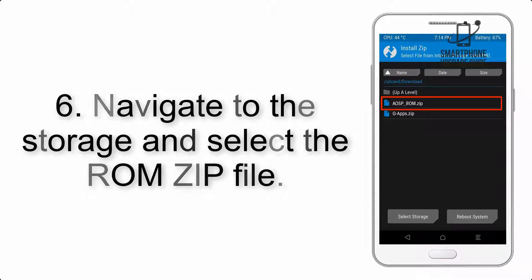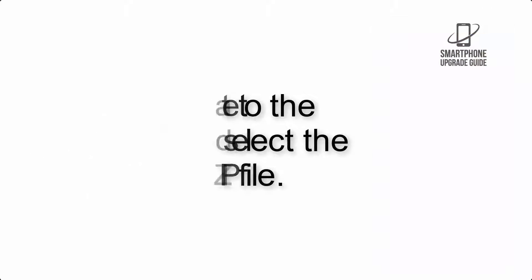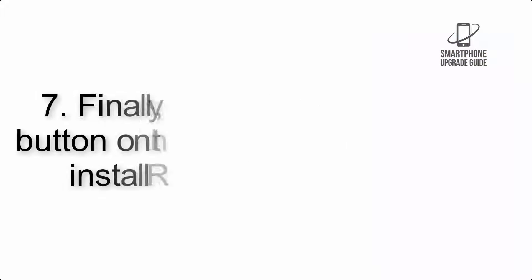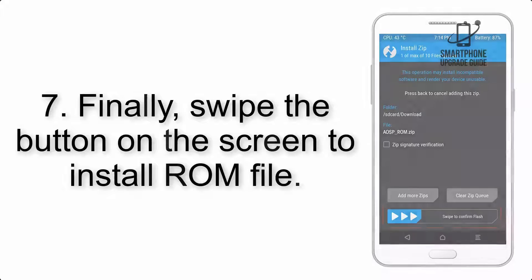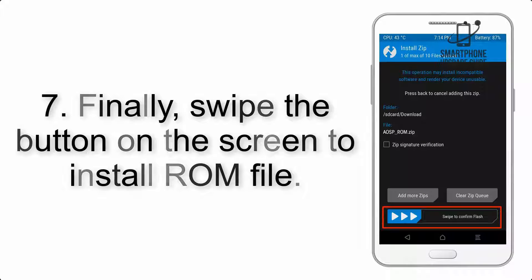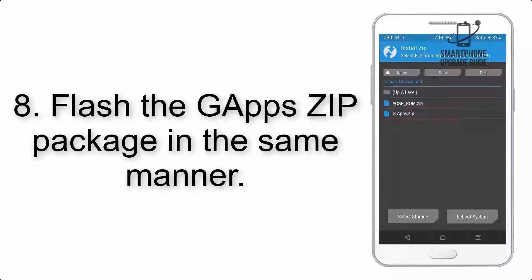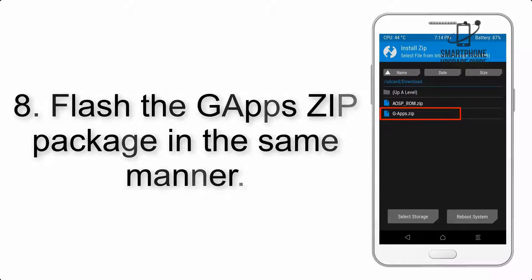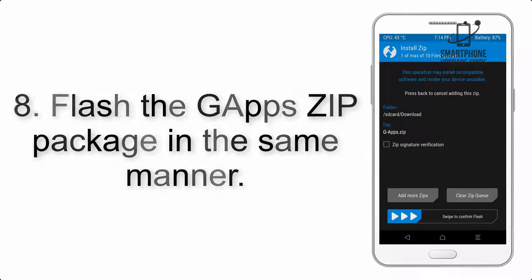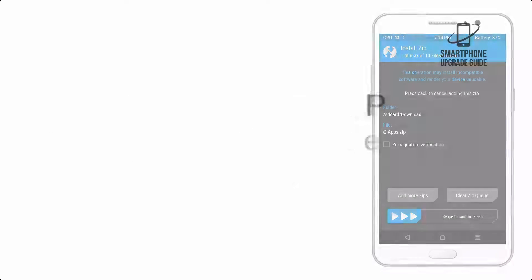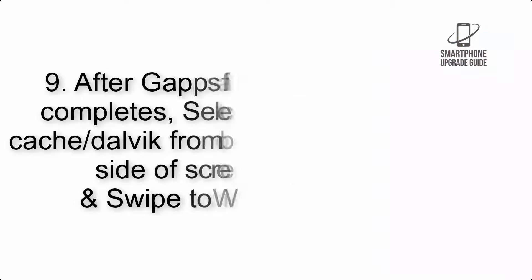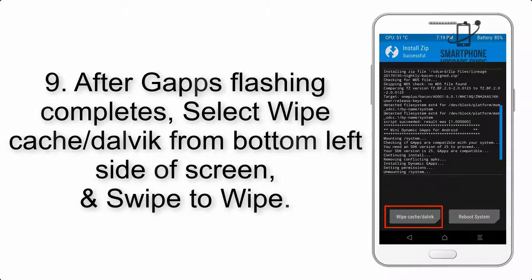Step 5: Go back to the recovery main screen and tap on the Install button. Step 6: Navigate to the storage and select the ROM zip file. Step 7: Swipe the button on the screen to install the ROM file. Step 8: Flash the G apps zip package in the same manner.